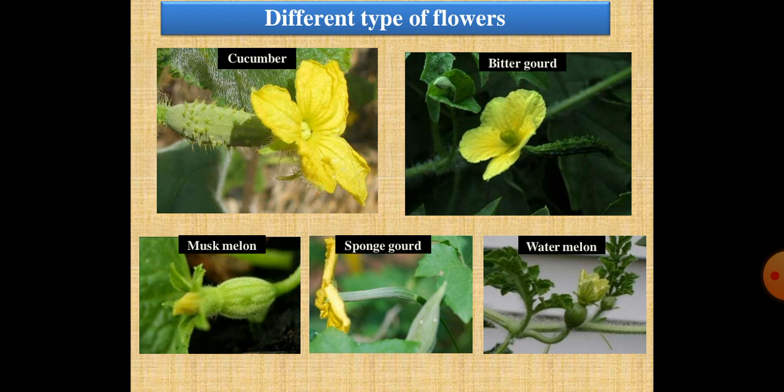Regarding pollination, it takes place early in the morning between 6 to 8 AM in cucumber, pumpkin, muskmelon, and watermelon. Pollination is altered during the day when temperature is high in bottle gourd and ridge gourd. In snake gourd and pointed gourd, anthesis takes place during the night and pollination occurs early in the morning. In pumpkin, pollen production is more, while in muskmelon, pollen production is scanty and pollen grains are sticky due to the highly firm coating surrounding them.